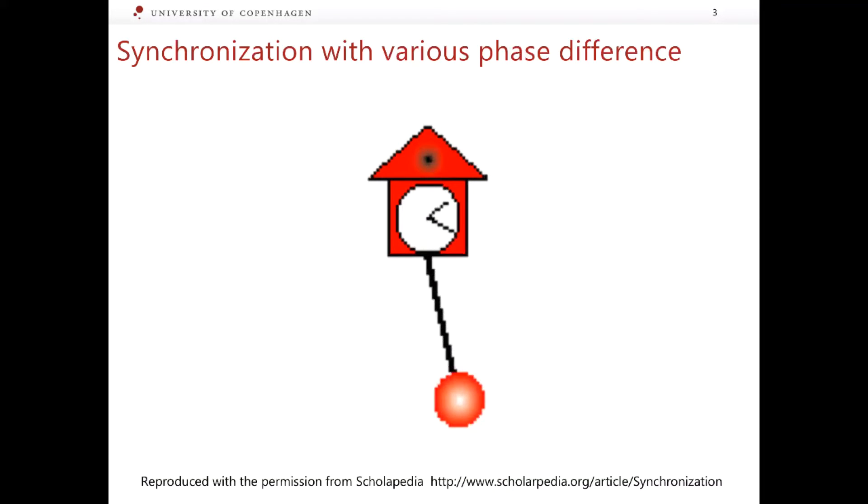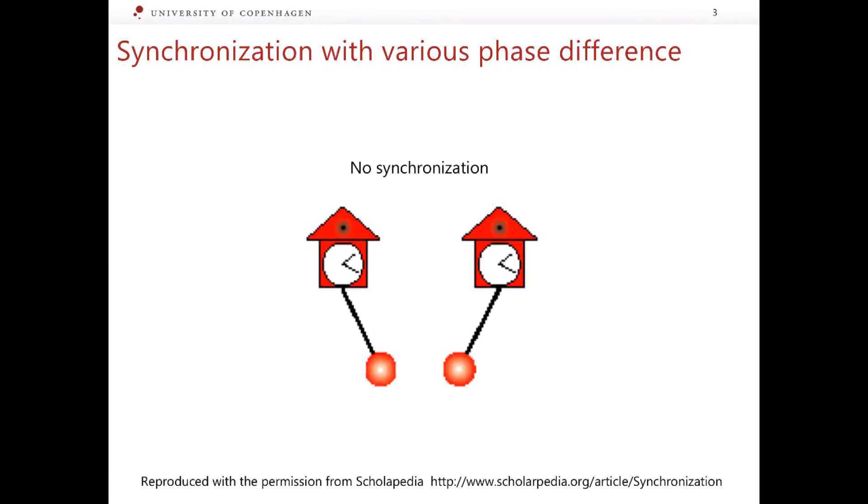Note that when the pendulum sways, it makes the whole clock slightly sway too. And this, in turn, makes the beam to which it is attached swing to and fro by a small amount. Now suppose there is the second clock attached to the same beam. From the way the beam vibrates, it learns about oscillations of the first clock. Also, through the same mechanism, it sends information about its own oscillations to its neighbor. This is how the coupling between the clocks works.